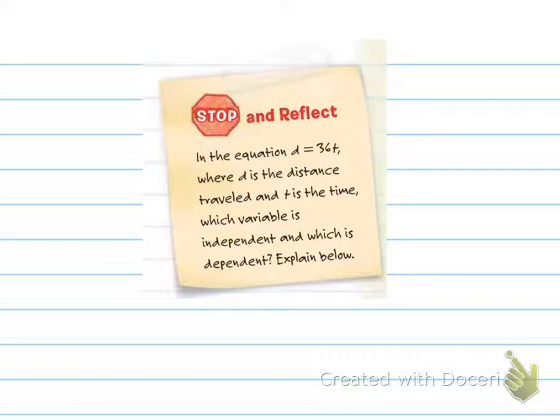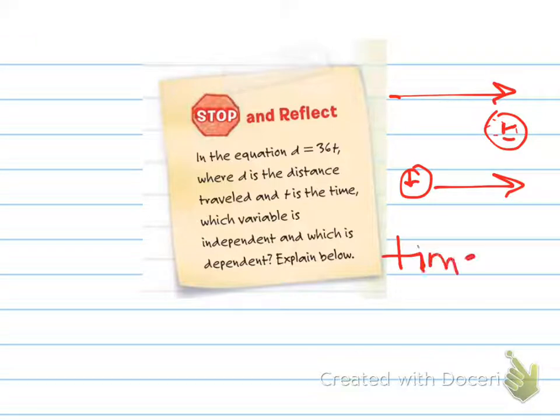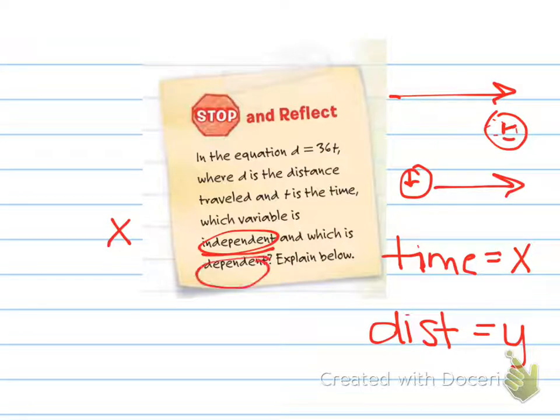In the equation D equals 36 times T, where D is the distance traveled and T is the time, which variable is independent and which is dependent? So here's the thing. Does the distance traveled indicate what the time is, or does the time that you've traveled indicate the distance that you go? I would say that the independent variable is the time. That's going to be my X, my independent variable. And my distance that I've driven is going to equal my Y, my dependent variable.